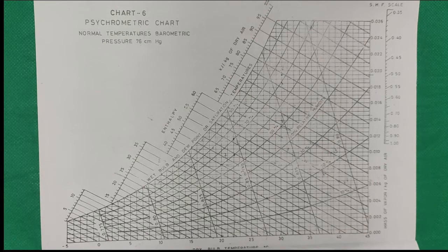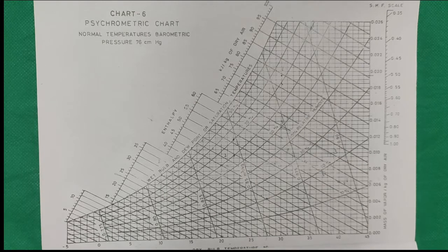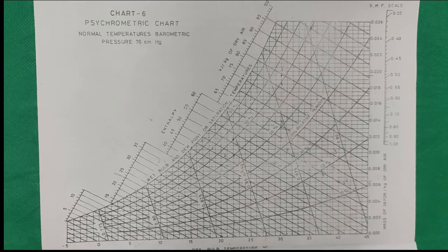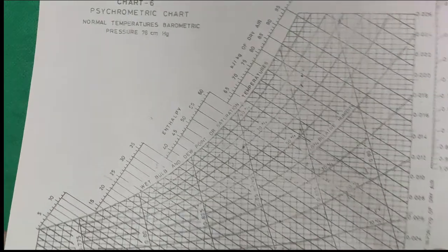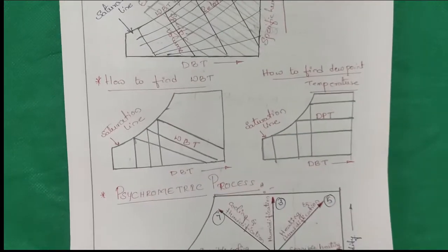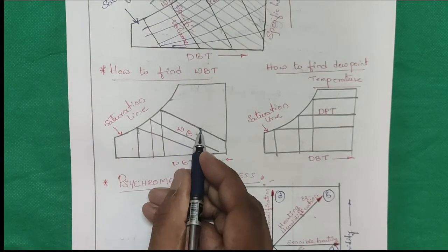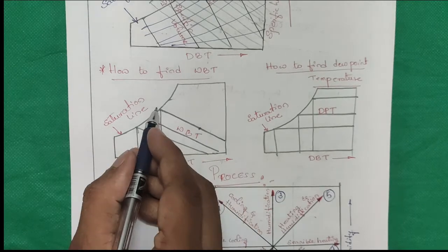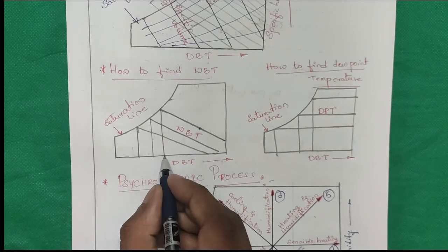How to find out dew point temperature and wet bulb temperature? Usually you will directly get the dry bulb temperature, but you will not get the dew point temperature and you will not get the wet bulb temperature. During that condition, you can easily find out wet bulb temperature. You will get some point on the chart — you have to draw an inclined line up to the saturation curve, then draw a vertical line downward. That gives the wet bulb temperature.